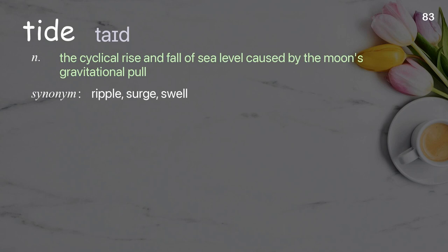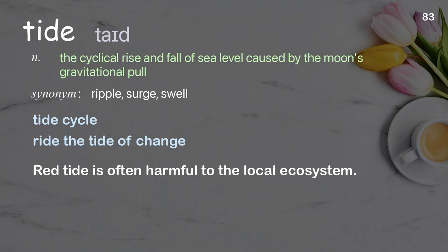Tide: the cyclical rise and fall of sea level caused by the moon's gravitational pull. Examples: tide cycle, ride the tide of change. Red tide is often harmful to the local ecosystem.